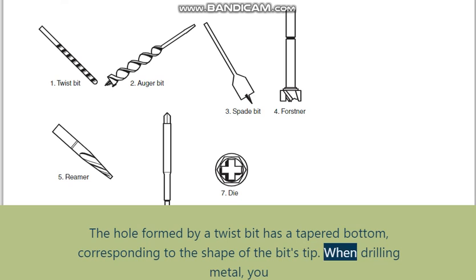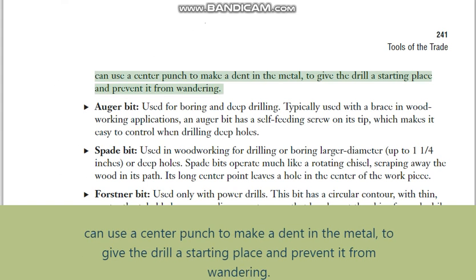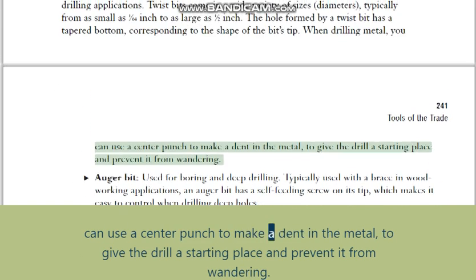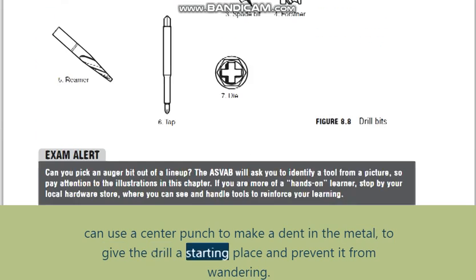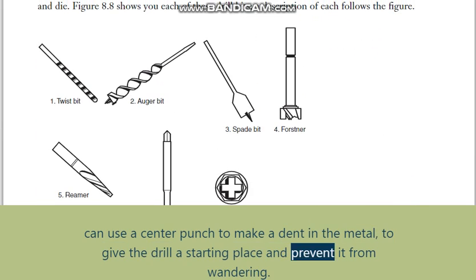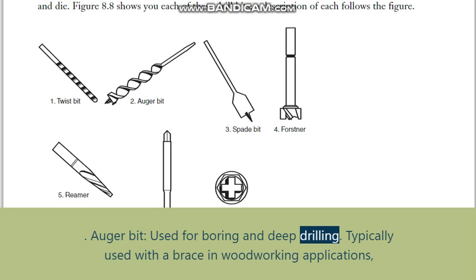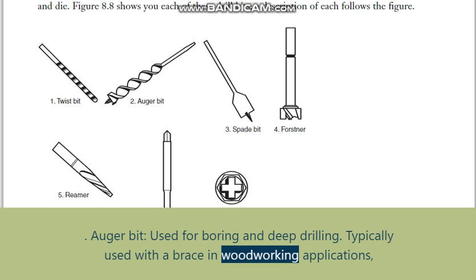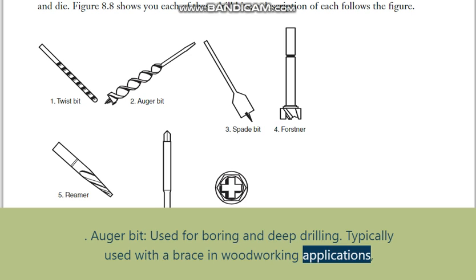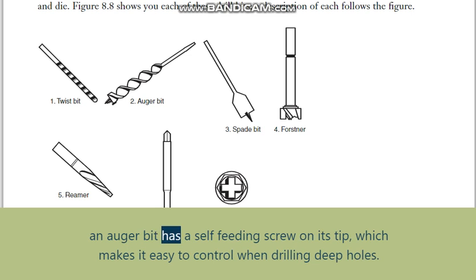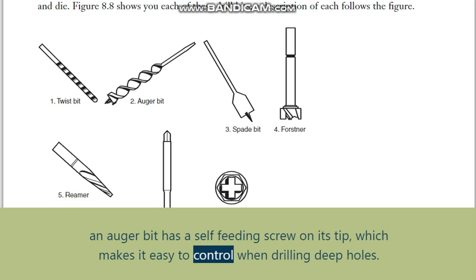The hole formed by a twist bit has a tapered bottom corresponding to the shape of the bit's tip. When drilling metal, you can use a center punch to make a dent in the metal to give the drill a starting place and prevent it from wandering.